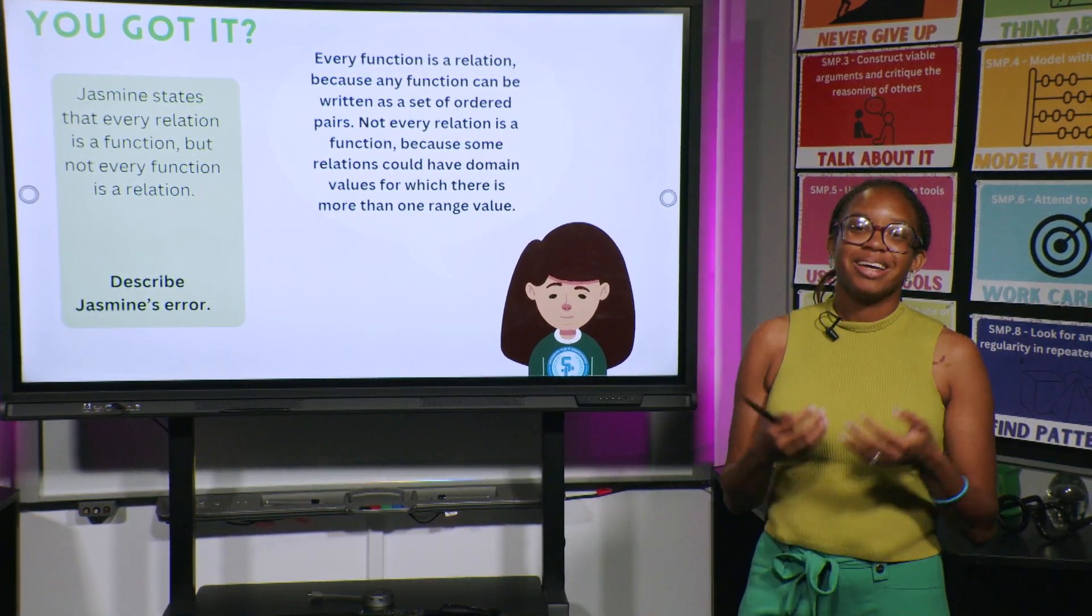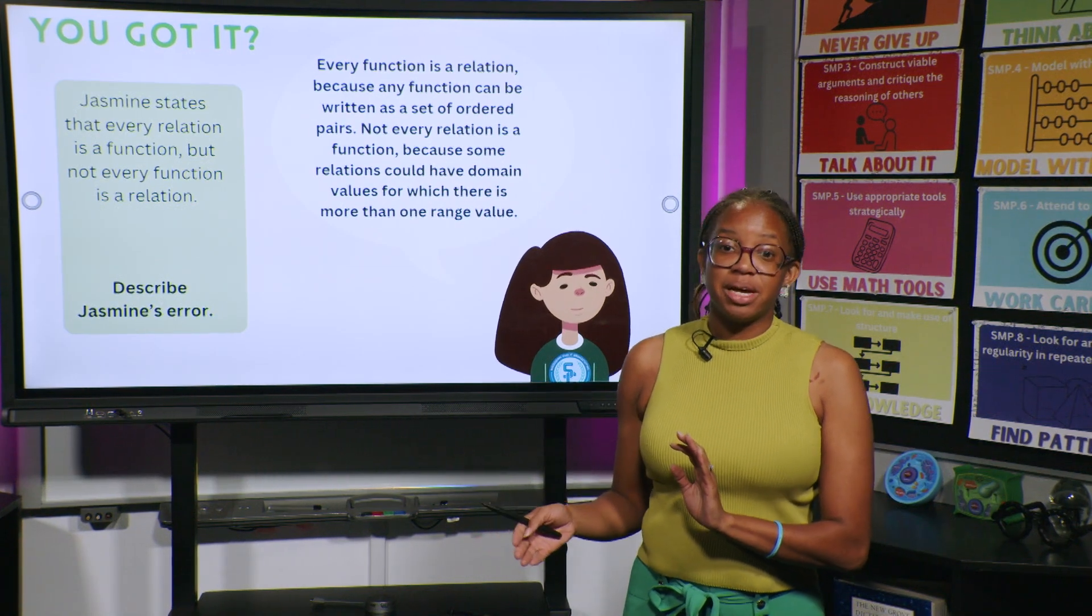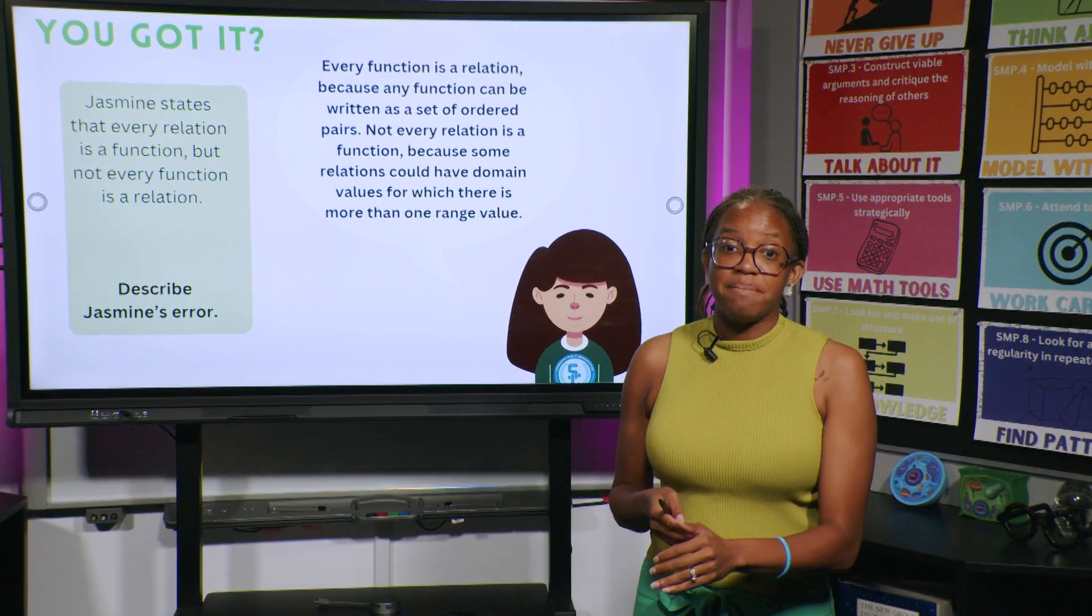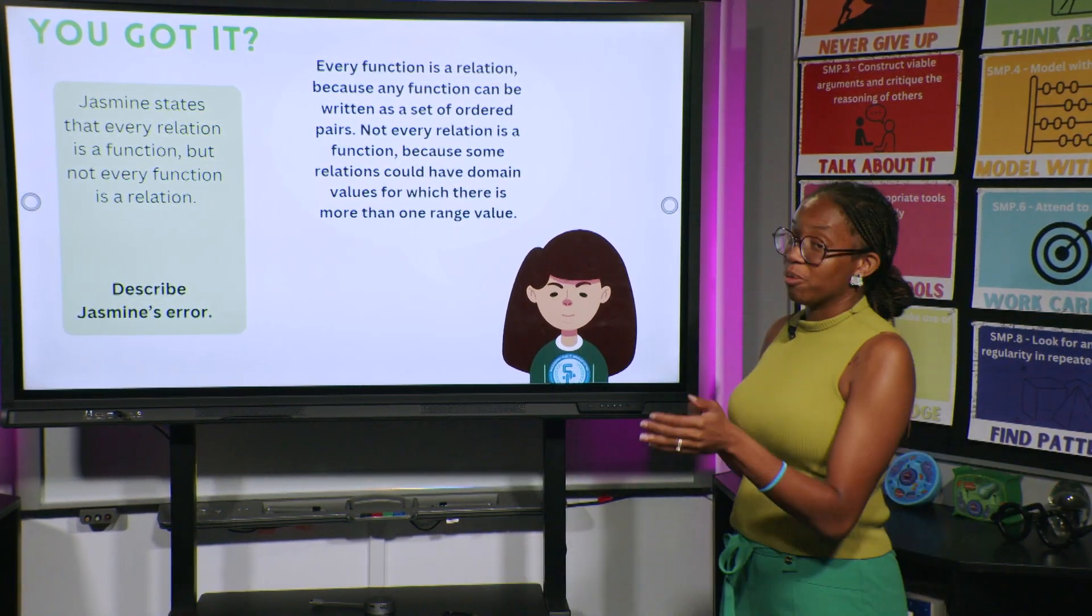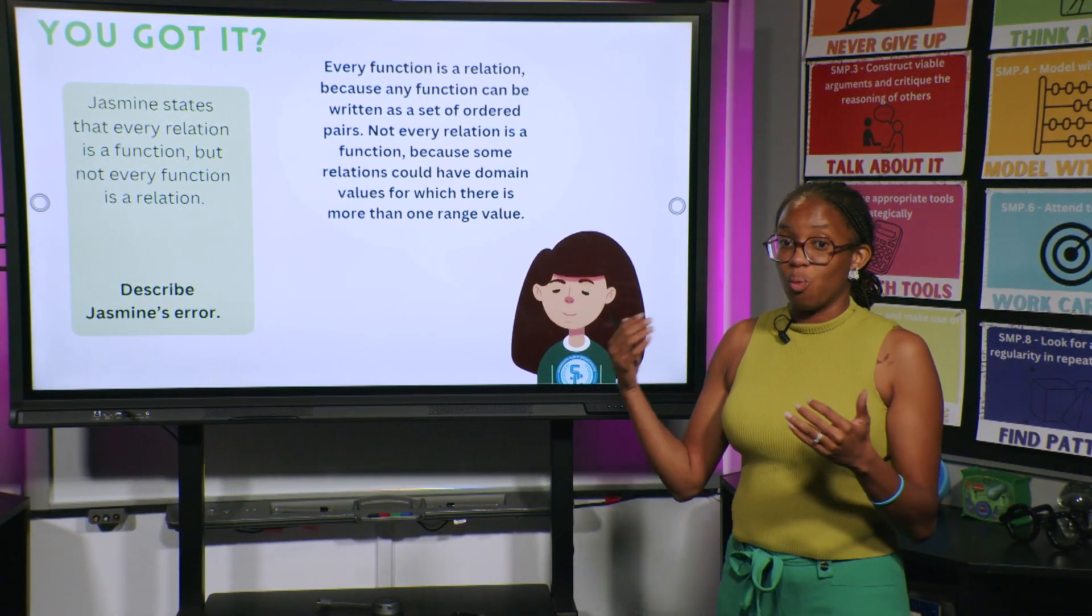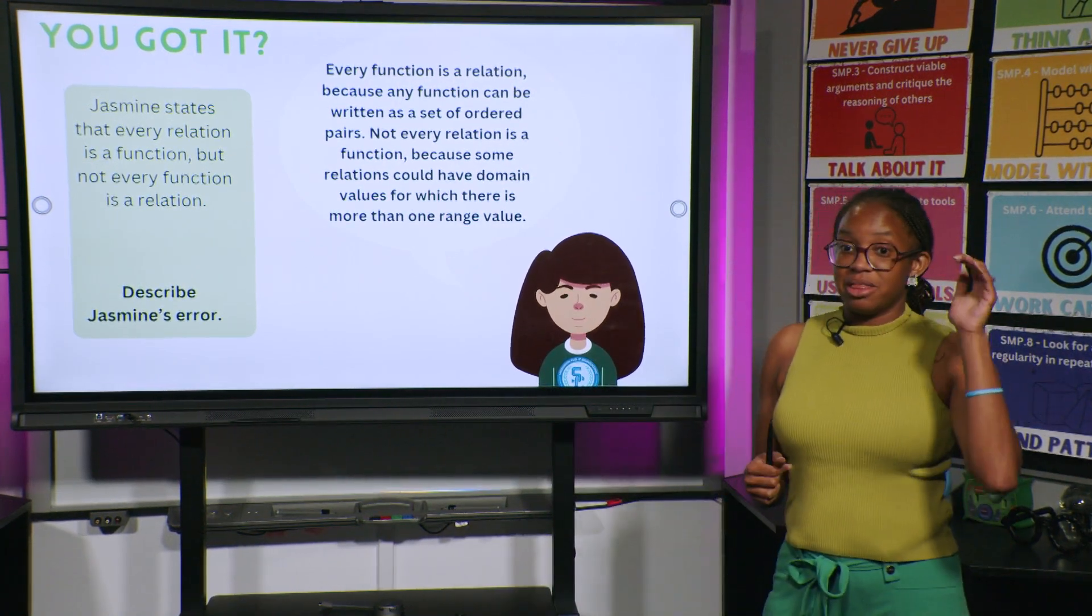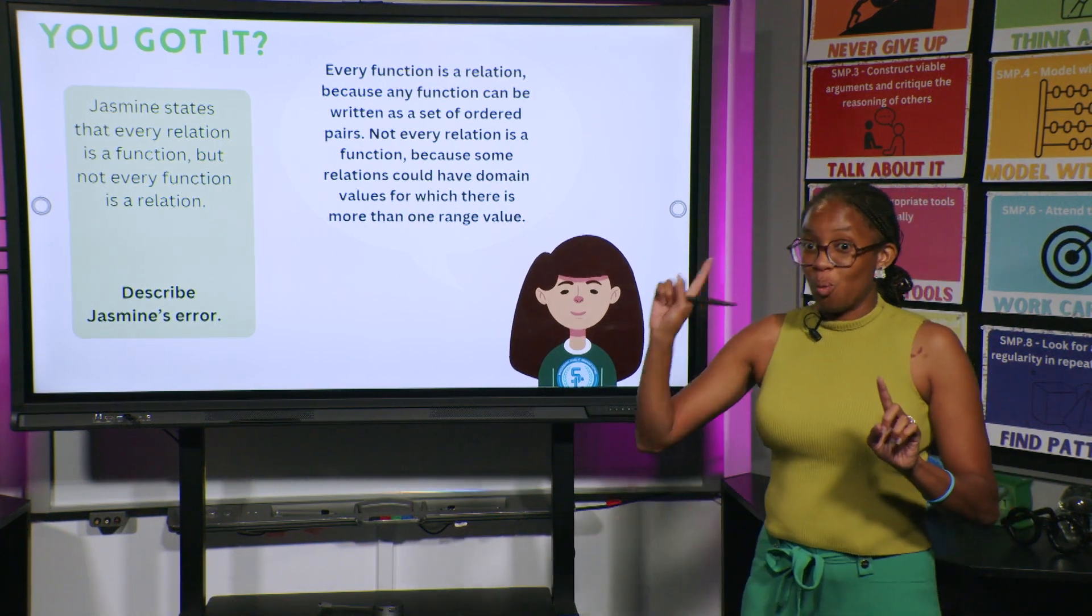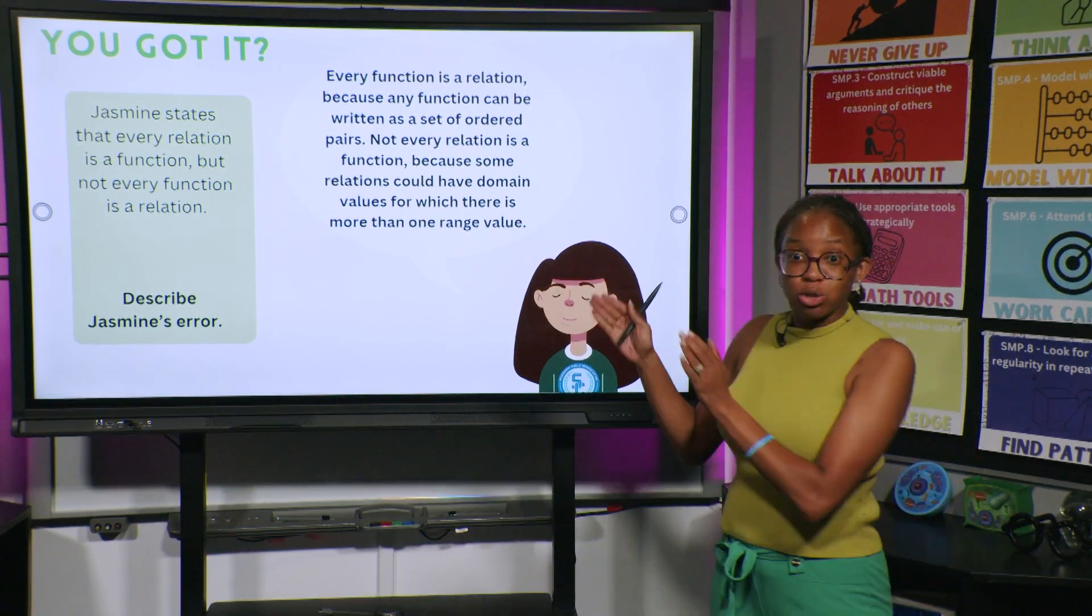Well, every function is a relation because in order for it to be a function, that means a set of ordered pairs, meaning I have a relationship between the X and the Y, and it's also one to one. That means I have the domain, one domain going to one range, and not one domain going to multiple ranges.